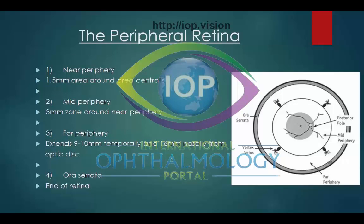The peripheral retina has four parts. The first is the near periphery, which extends 1.5 mm around the area centralis. Surrounding this is the mid periphery, which extends 3 mm out from the near periphery. The far periphery extends 9 to 10 mm temporally and 16 mm nasally. Finally, the ora serrata is where the retina ends.